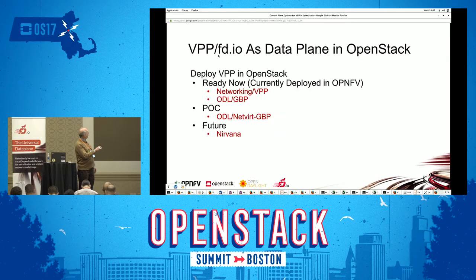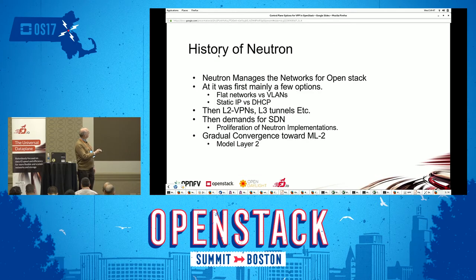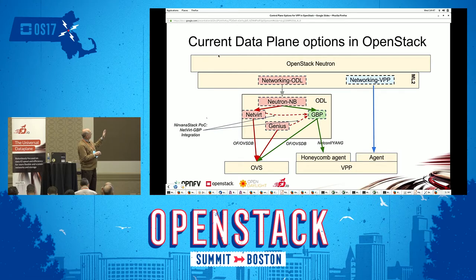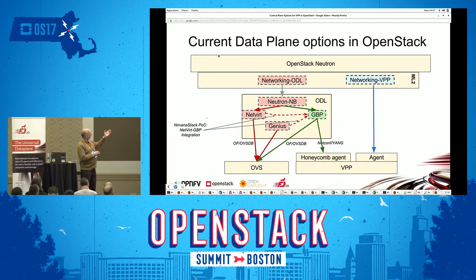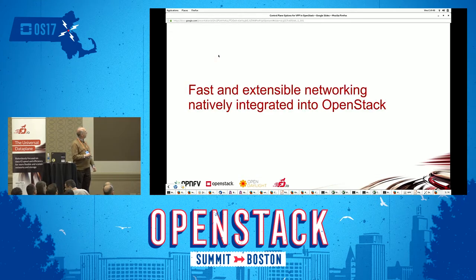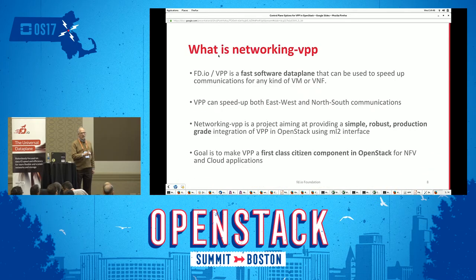You can see on the left we have OpenDaylight — networking ODL — with the ML2 plug-in, and underneath that the options for ODL. On the right you see networking VPP, which is its own ML2 driver that talks to an agent in the compute node with VPP. Next, we are going to talk about networking VPP.